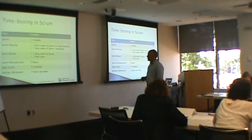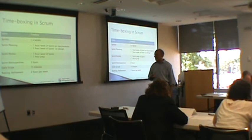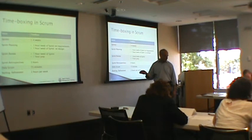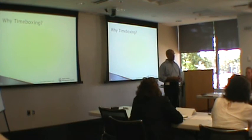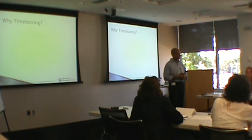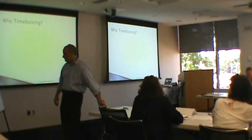Sprint planning is one hour per week of sprint. Sprint review is similarly one hour per week of sprint. Sprint retrospectives are about three hours for a two-week sprint. Why is time-boxing important? It gets you to the work rather than planning for the work. You're working, so you can't dilly-dally — there's a discipline to it that keeps the team moving forward.